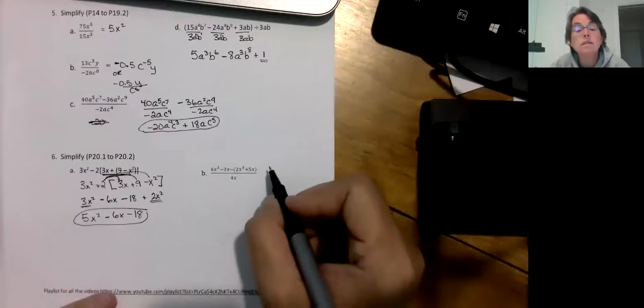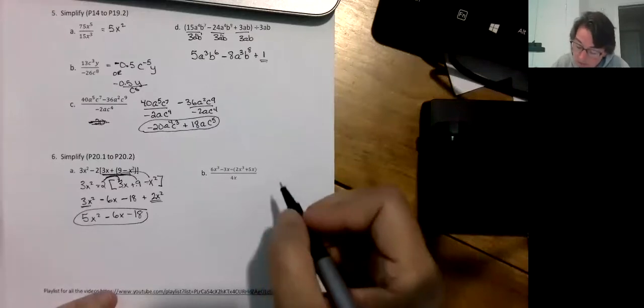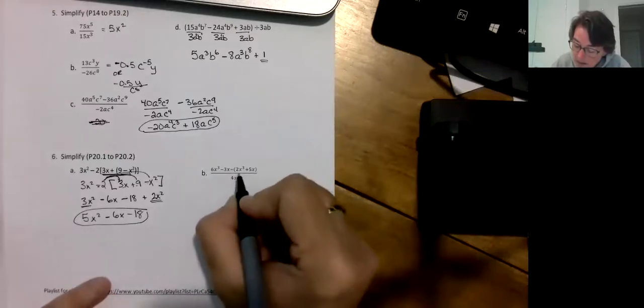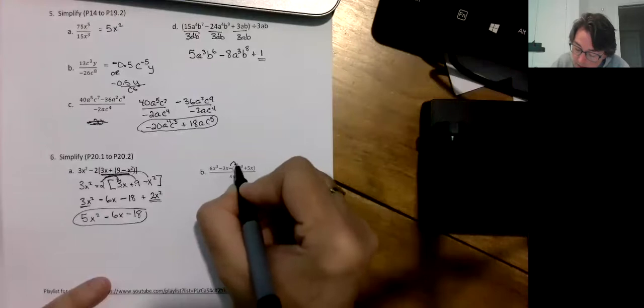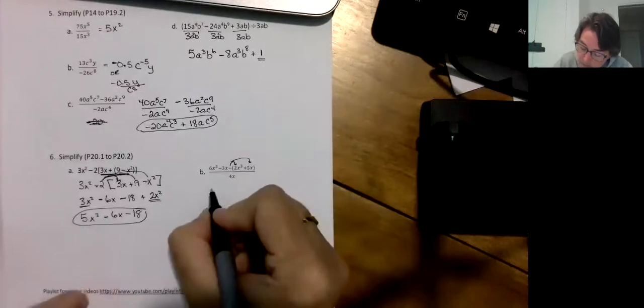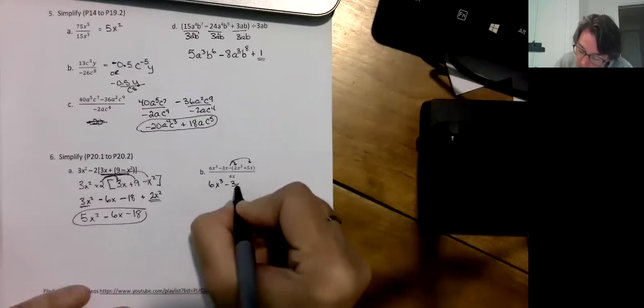Last one, and sorry it's so squishy and small. I'll see what I can do on your worksheet to make it bigger for you. Let's look in our brackets. There is nothing to do because those are not like terms, but I can distribute that negative. That's going to be my first thing to do. 6x³ minus 3x minus 2x³ minus 5x all divided by 4x.